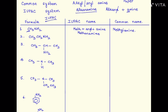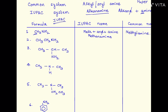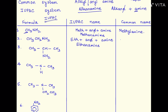Second one — there are one and two carbons, a straight chain saturated compound. So we have ETH + ANE + amine. The E cancels out and we have the compound as ethanamine. Now in the common system, CH3CH2 is an ethyl group, so this is known as ethylamine.